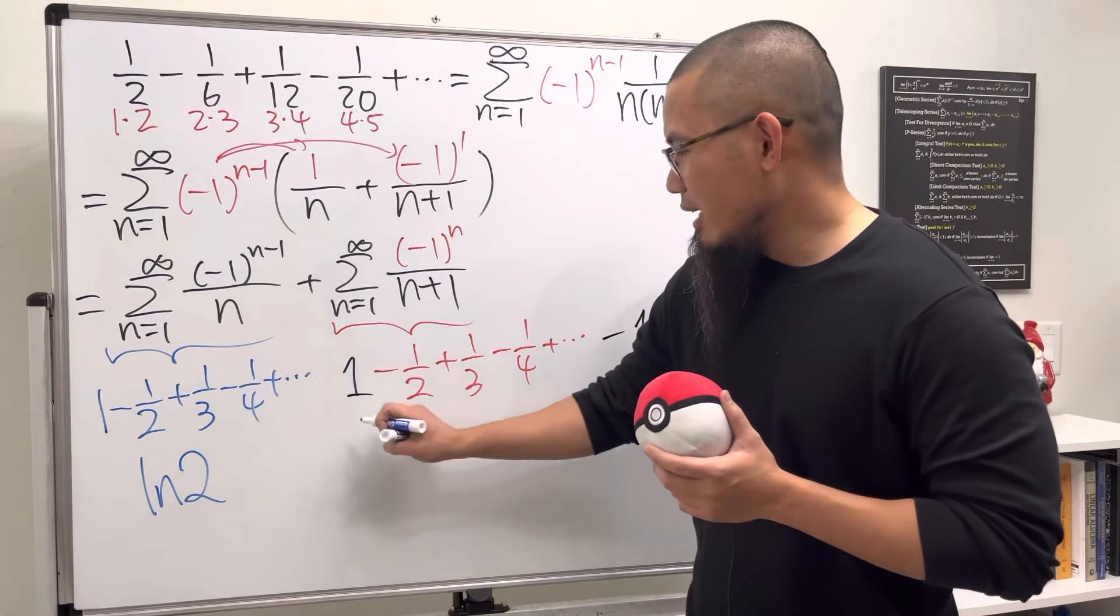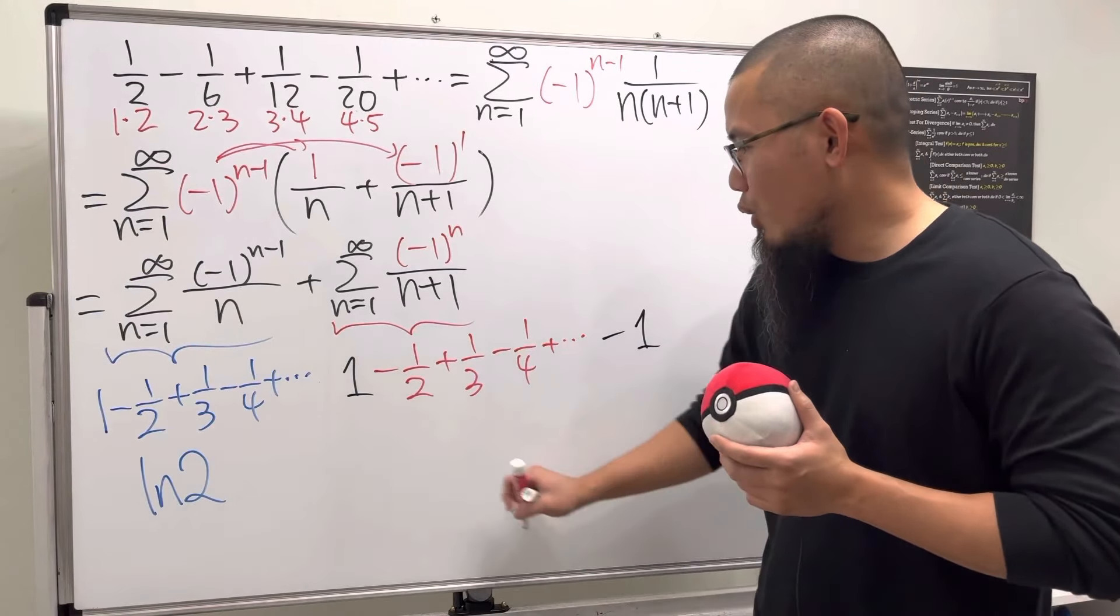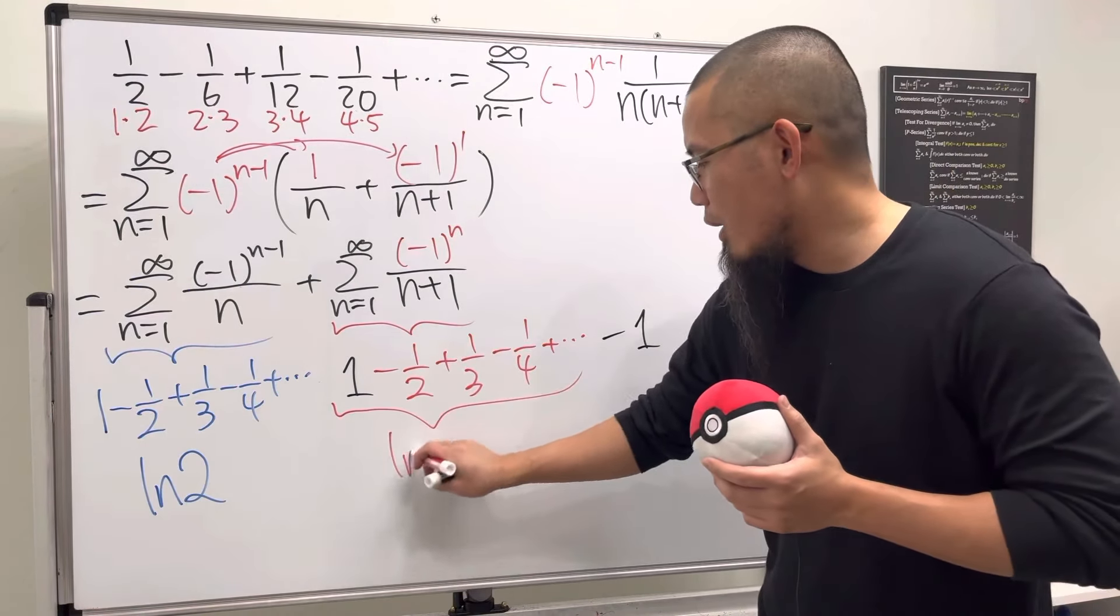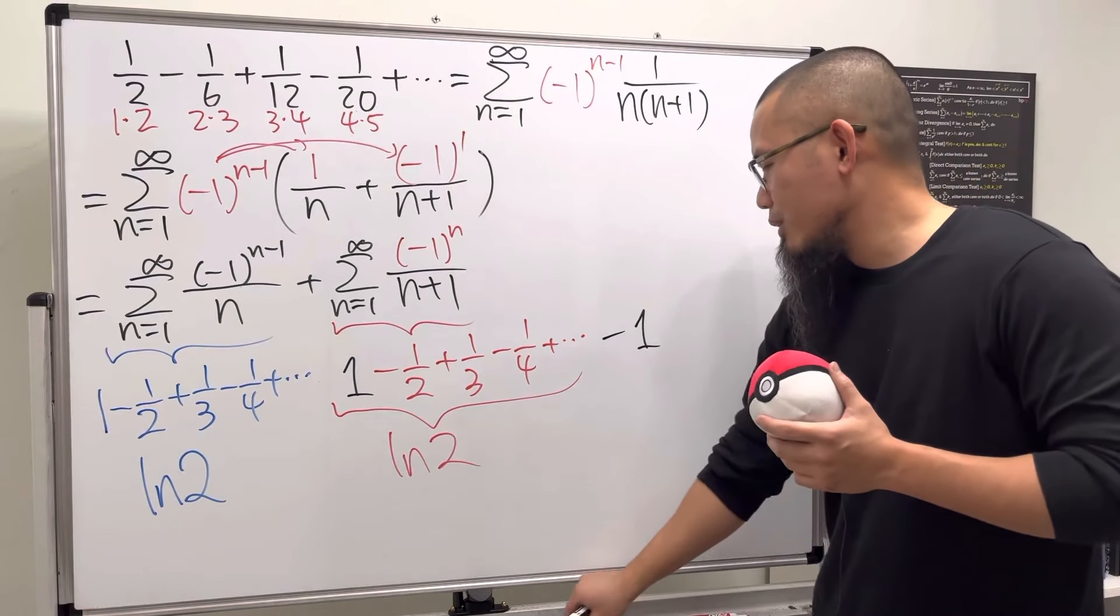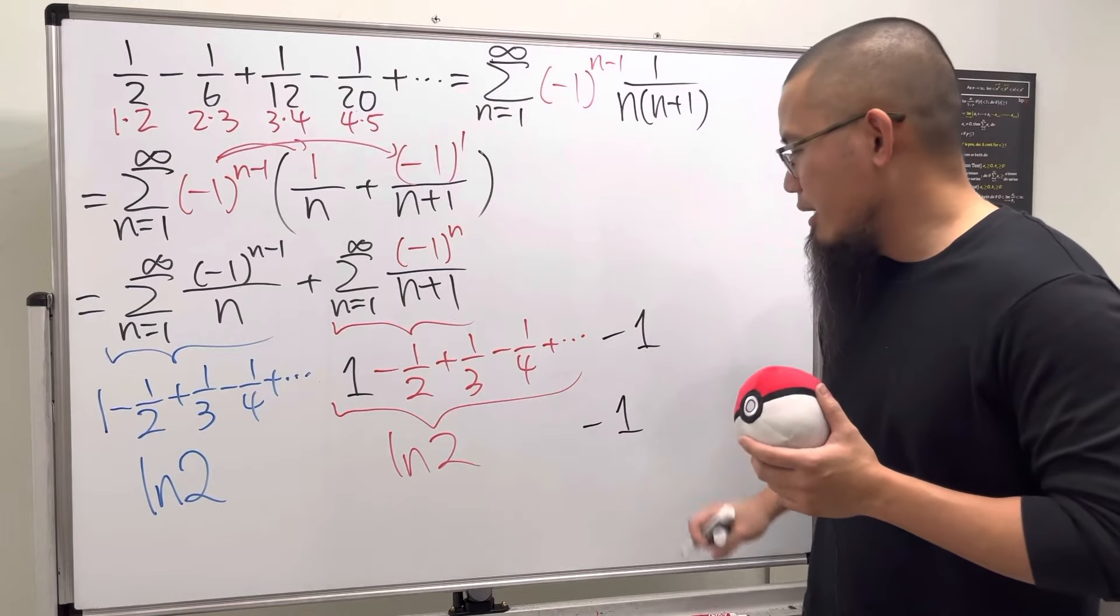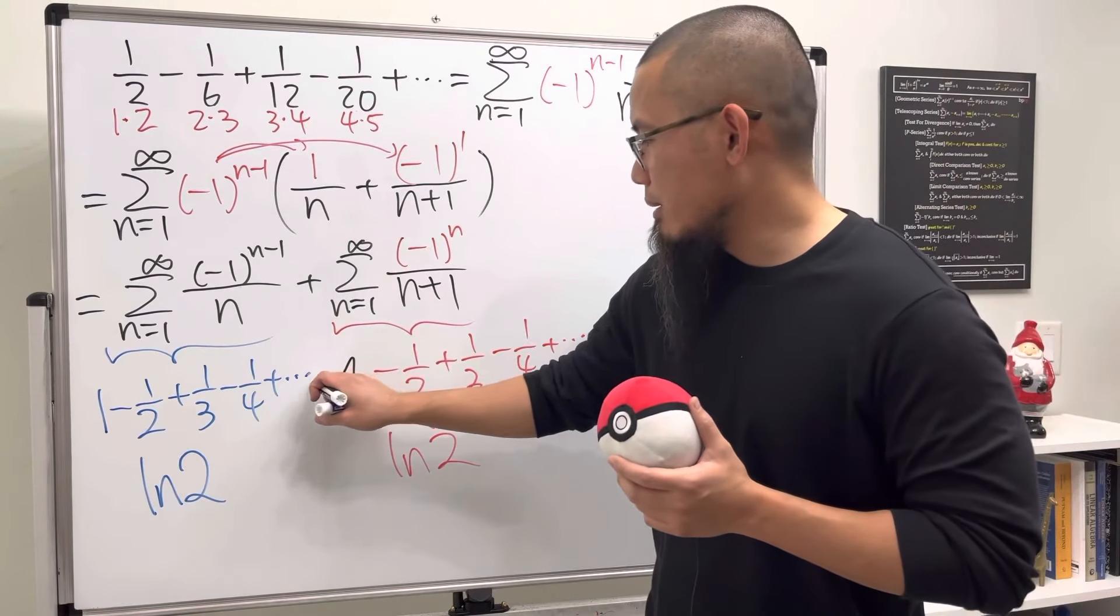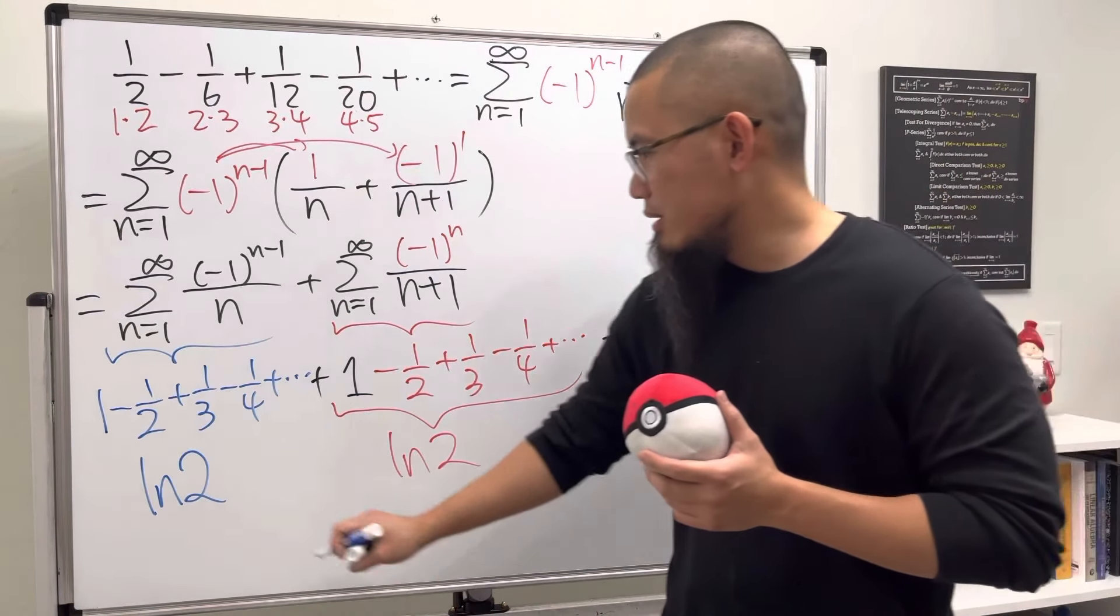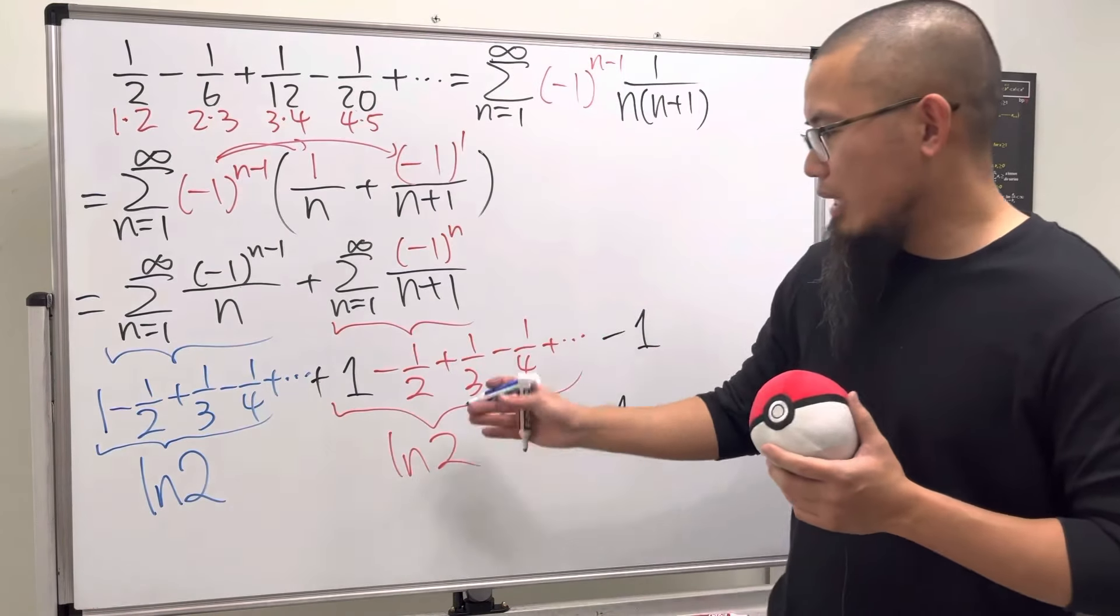So ladies and gentlemen, as you can see now, all this right here will be ln(2), and then of course don't forget to minus the 1 right here all the way at the end. And of course let's put on the plus sign, and as you can see this right here gives us ln(2).